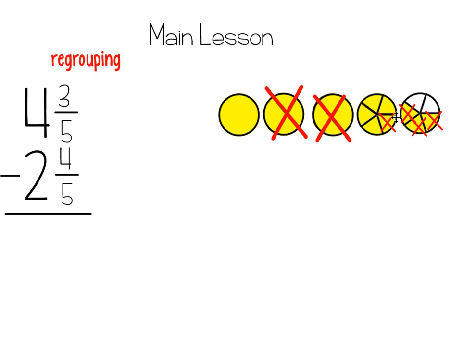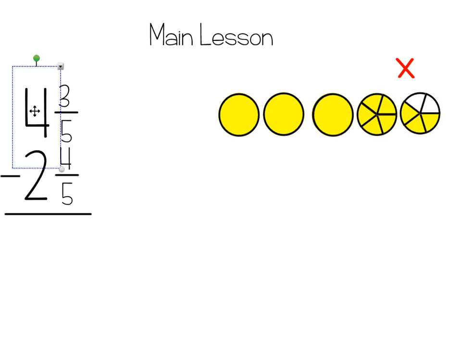This is called regrouping. When we traded in the hole and made it into fractions, we regrouped our number. We can also do this in written form. So if we started with our 4 and 3 fifths, when I went to go and trade the hole into 5 fifths, we do that by crossing off our whole number. We're crossing off our whole number and we're taking 1 away from it. So when I take 1 away from 4, it becomes 3.